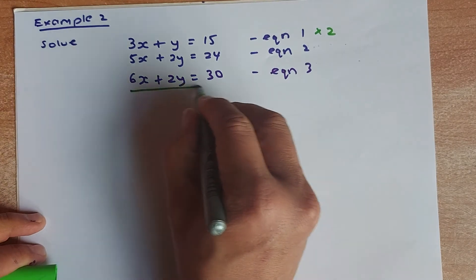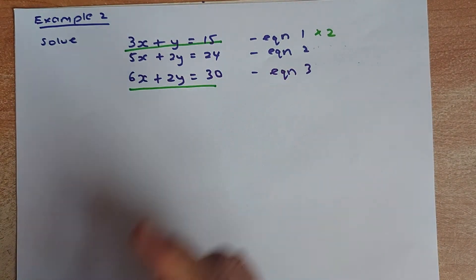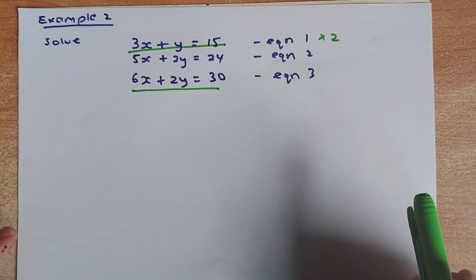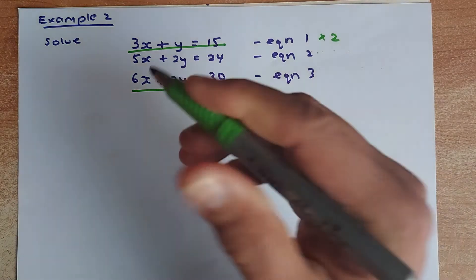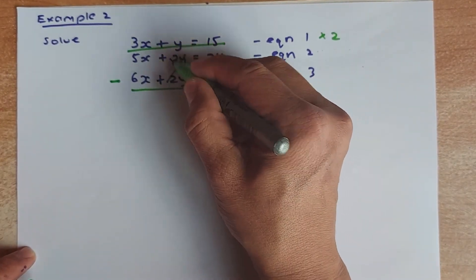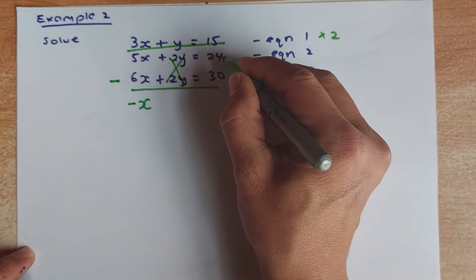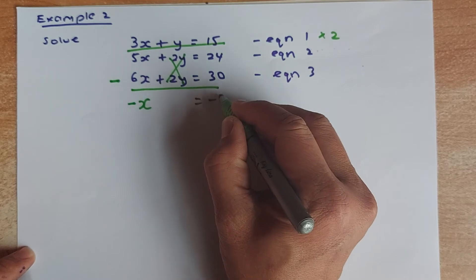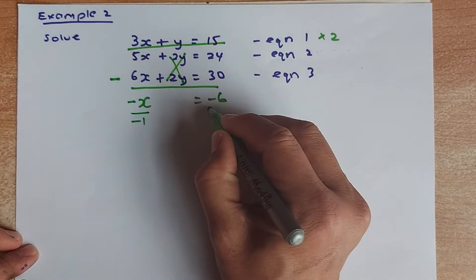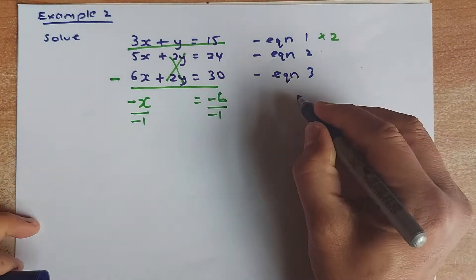Now we work with equation 2 and equation 3. The coefficient of Y is now the same. Because both Y terms are positive, we subtract. 2Y minus 2Y — they are eliminated. 5X minus 6X gives minus X. 24 minus 30 gives minus 6. To solve, divide by negative 1 on both sides, and X equals 6.